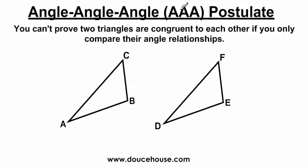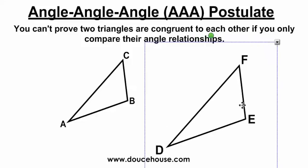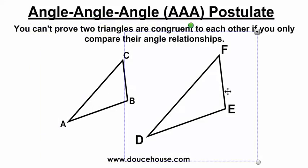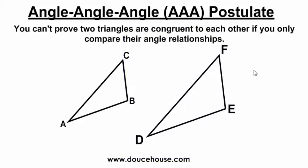Sometimes people get confused by the Angle-Angle-Angle postulate — but this is actually not a valid postulate. You cannot prove two triangles are congruent by comparing only their angle relationships. For example, if all three pairs of angles are congruent, I can still make one triangle bigger than the other — the angles stay the same but the side lengths differ. So if you have no information about side lengths, you cannot prove two triangles are congruent by AAA.